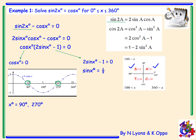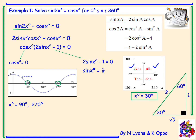Sinx = 1/2 looks for angles in the first and second quadrants. It is an exact value: sinx = 1/2 gives 30 degrees. The angle in the first quadrant is 30 degrees and in the second quadrant is 180 - 30 = 150 degrees. Therefore our final solution is x = 30°, 90°, 150°, and 270°.